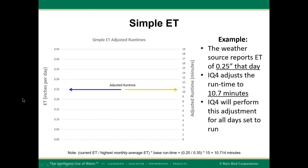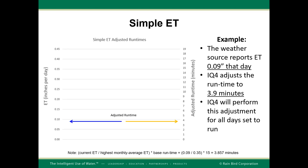On one day, an ET of 0.25 inches per day was received from the weather source. Since this is lower than the station base runtime ET, IQ4 adjusts the station runtime to 10.7 minutes. On another day, an ET of 0.09 inches per day was received. Since this is also lower than the base runtime ET, IQ4 adjusts the station runtime to 3.9 minutes for the example station.